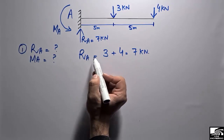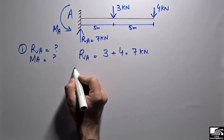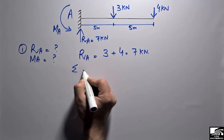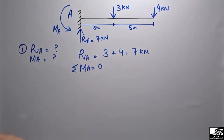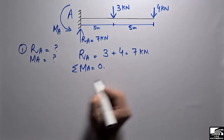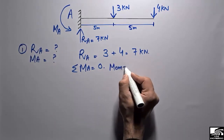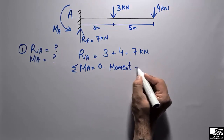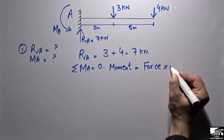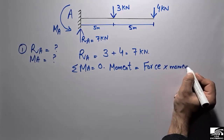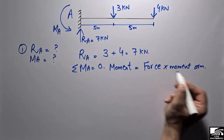Now to find out the moment at point A, we take the summation of moments at point A equal to zero. We use the formula: the moment at any point is equal to the force multiplied by the moment arm. This formula is used to calculate the moment at any point.